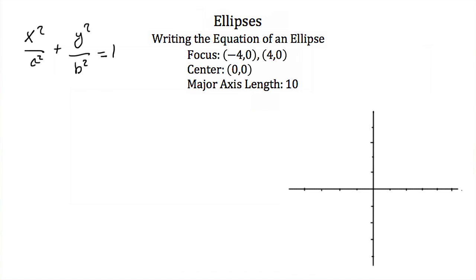We know our foci are at negative 4,0 and 4,0. Let's say that's here and there. Since our foci are on our x-axis that means our x-axis is our major axis and we're told that our major axis length is 10.